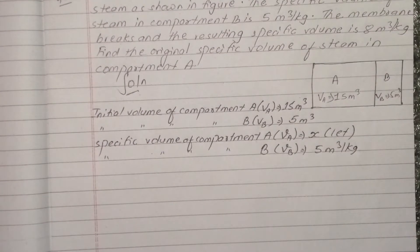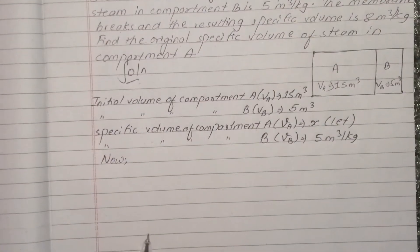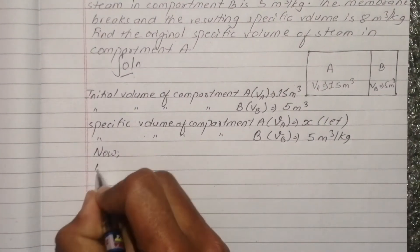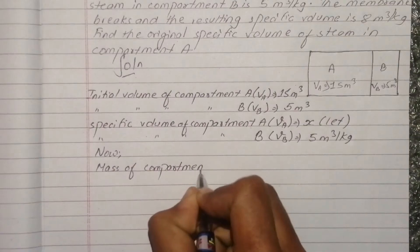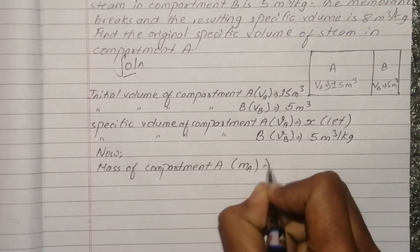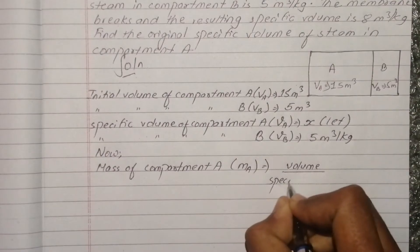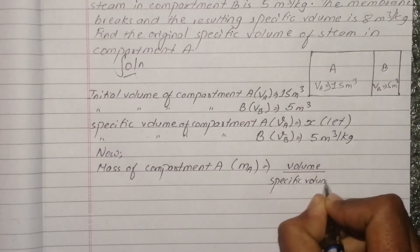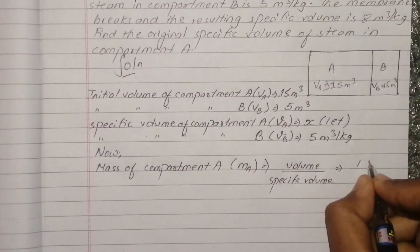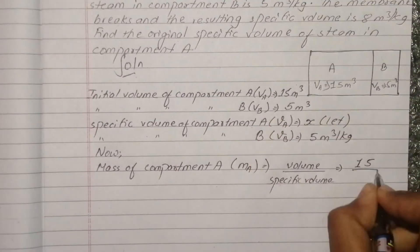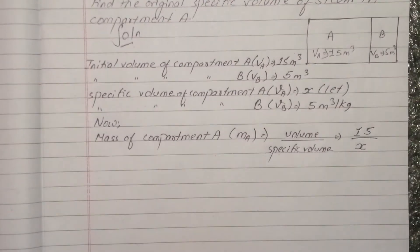Mass of compartment A — small m_A. Mass of compartment A equals volume A upon specific volume A. Volume A is 15 meter cube, and specific volume A gives the mass of compartment A.